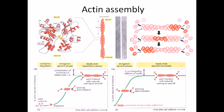Let us talk about the actin filament and actin filament assembly. The actin filament is a polymer — a linear polymer — and this polymer is made up of actin fibers. We have a protein called actin, and these actin proteins are arranged together in a coil-like structure, finally making a twisted filament.